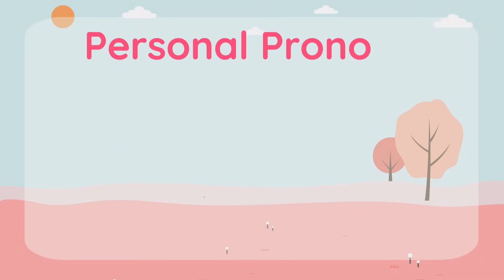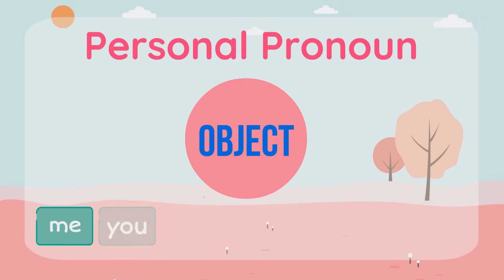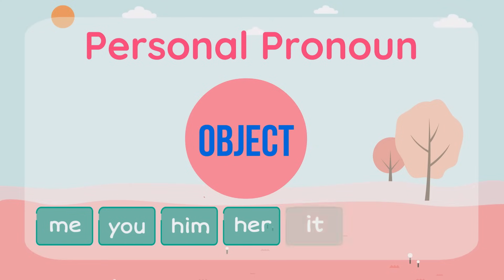Now let's focus on another type of personal pronouns: object pronouns. Me, you, him, her, it, us, them.